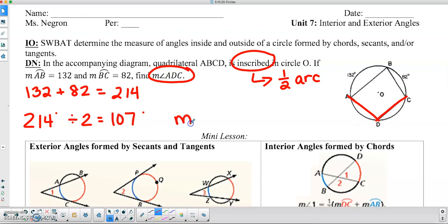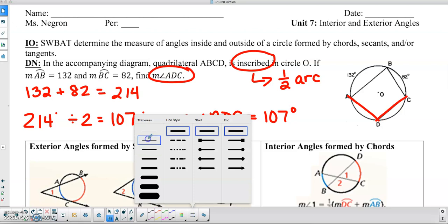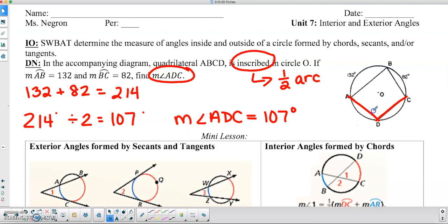So therefore, the measure of angle ADC is equal to 107 degrees. And what you can also do is write the angle into your diagram for further clarification.